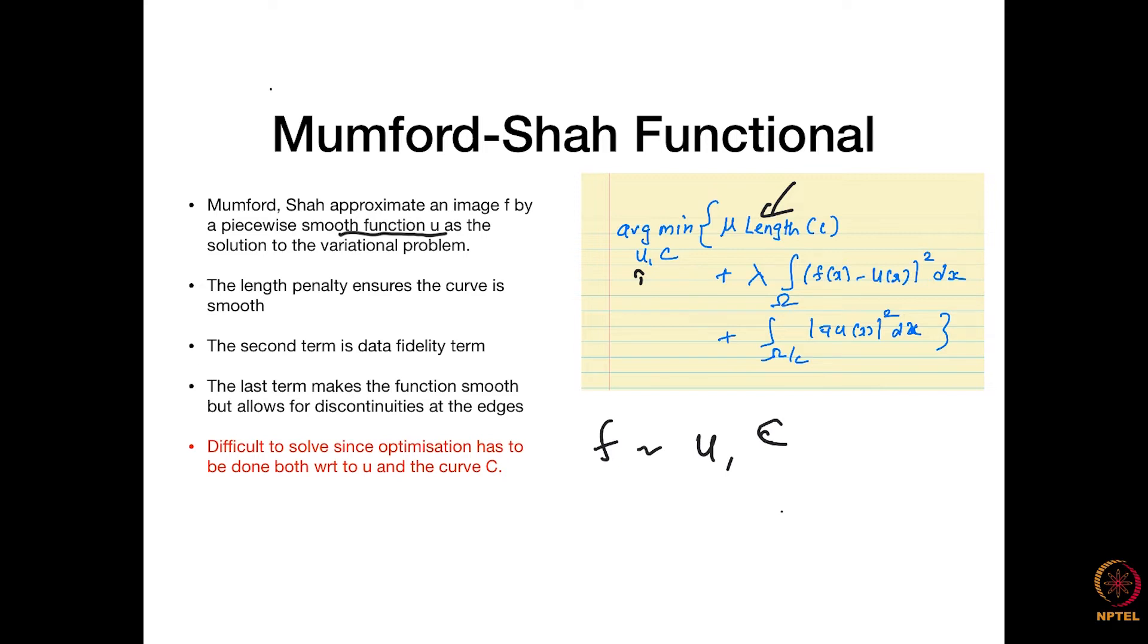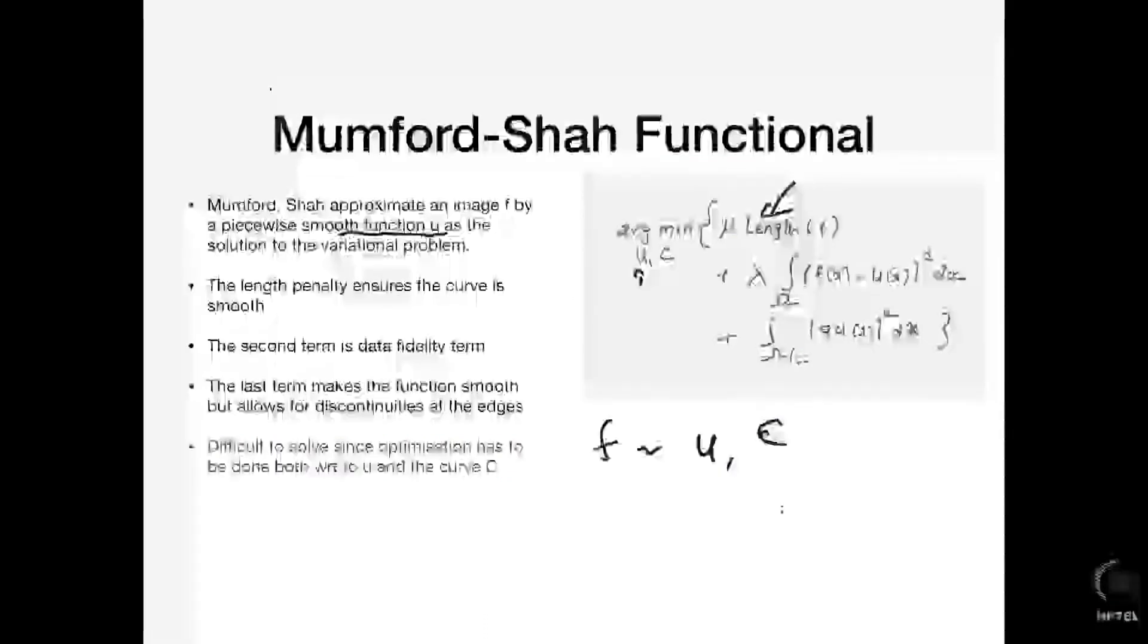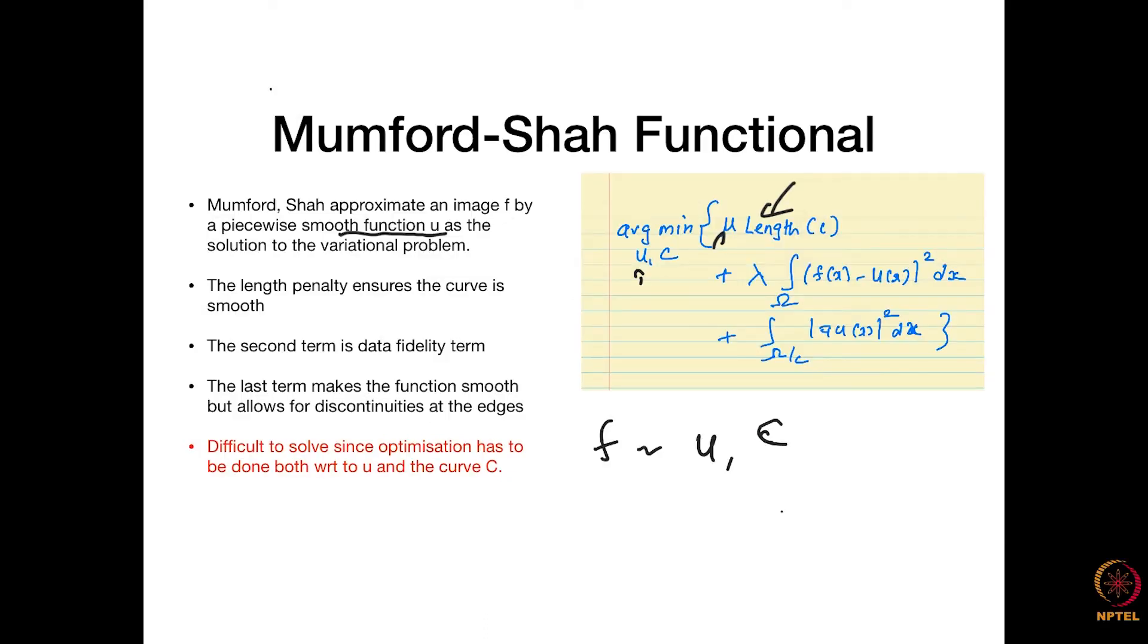The length penalty is the first term; it makes sure that the curve is smooth and has a hyperparameter mu. The second term is the data fidelity term. You want u to be as close to f as possible. The last term makes the function smooth but allows for discontinuities at the edges. Overall, when you minimize gradient of u squared, u will be very smooth in similar regions, but discontinuities are allowed at the edges. This is a difficult problem to solve because you want to optimize it both in terms of u and c.